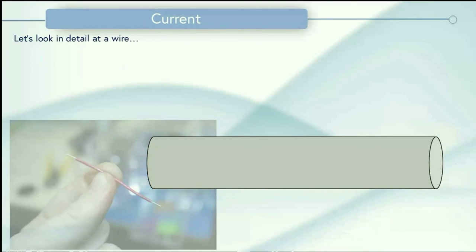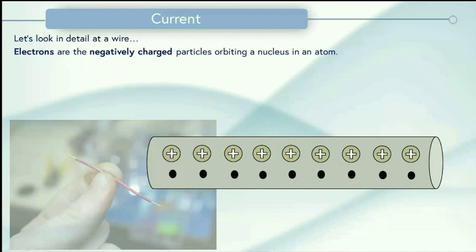So inside a metal we have atoms and the part of particular interest to us in the atom are the electrons. The electrons, as we know, are negatively charged particles which orbit a nucleus in an atom, and the electrons in this picture are the black dots.